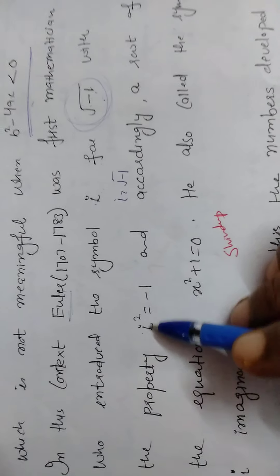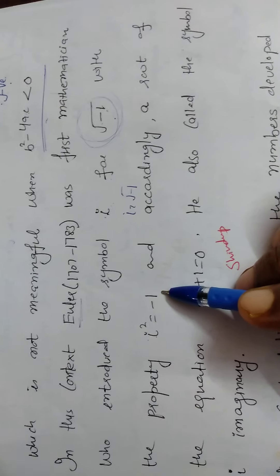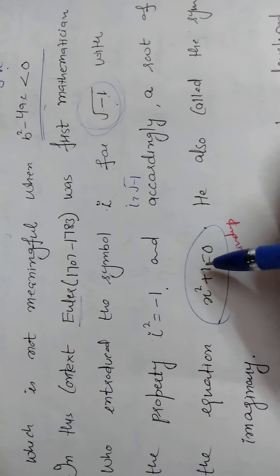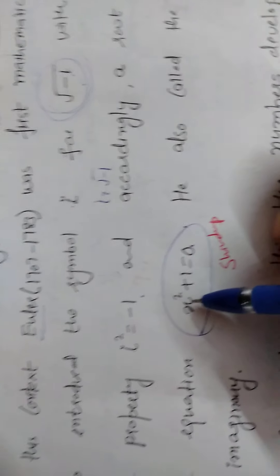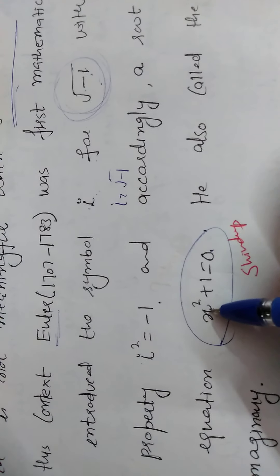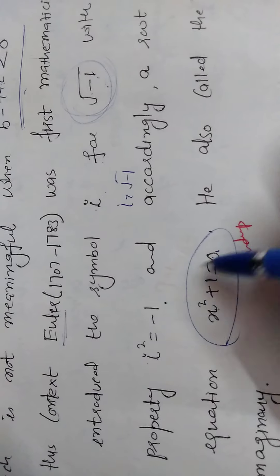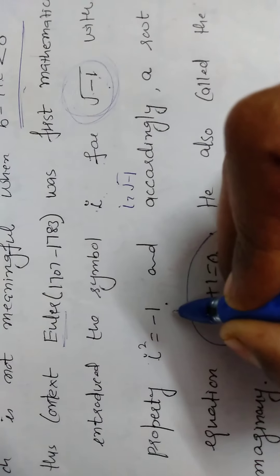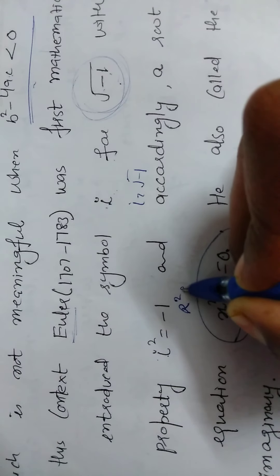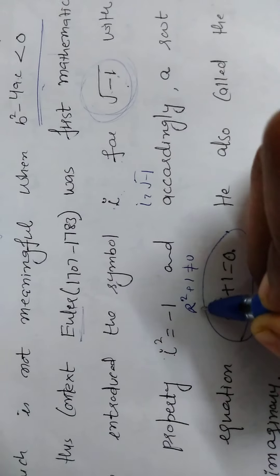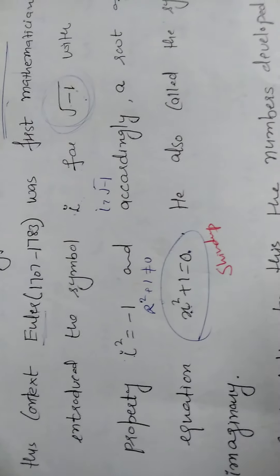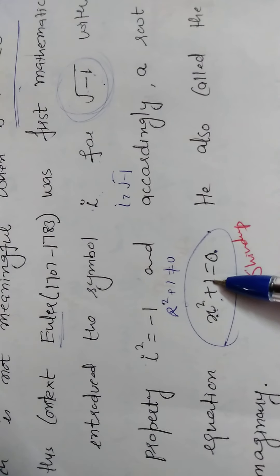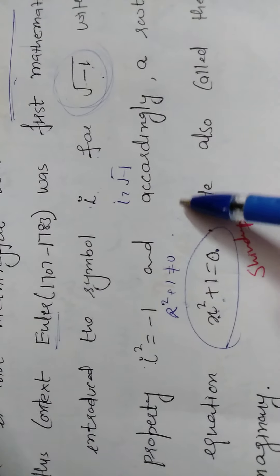It is a property of iota that, since iota is the square root of minus 1, squaring both sides gives iota squared equals minus 1. We may also think of the equation x squared plus 1 equals 0 — is there any real number whose square plus 1 equals 0? No, the square of any real number plus 1 cannot equal 0.